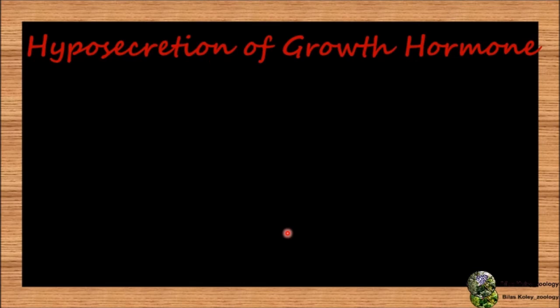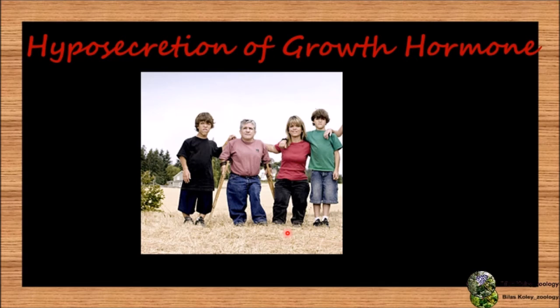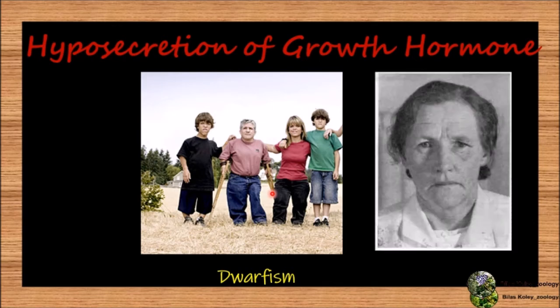There are some hyposecretion disorders of growth hormone. Dwarfism — we can identify this by retarded physical growth, which is caused by deficiency of STH, that is somatotrophic hormone or growth hormone, in children. The patient has a normal brain. Simmond's disease occurs due to hyposecretion of STH in adults and is characterized by smaller hands, feet and face, and premature aging.